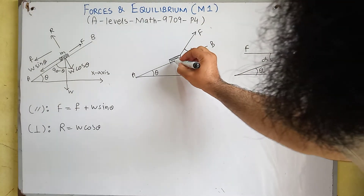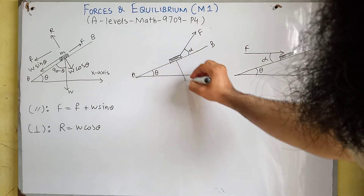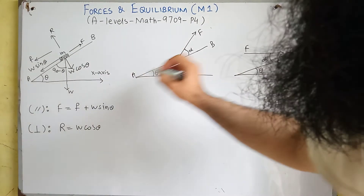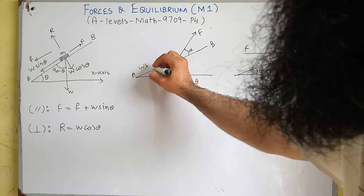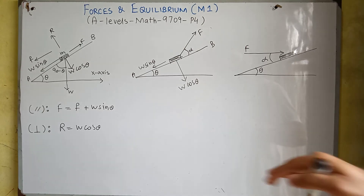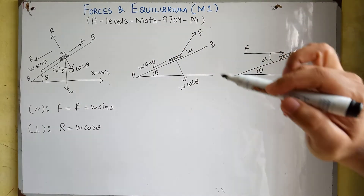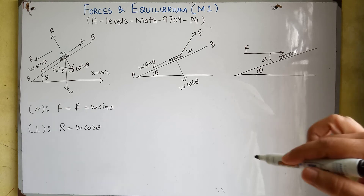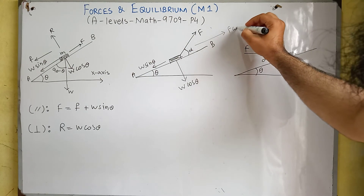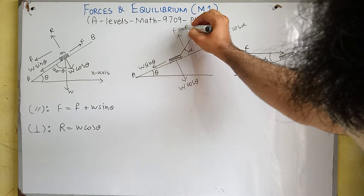We can resolve the parallel and perpendicular components of weight. The perpendicular component of weight is W cos theta and the parallel component is W sin theta. We can also resolve parallel and perpendicular components of force F, as shown in the last video. The parallel component of force F is F cos alpha, and the perpendicular component of force F is F sin alpha.